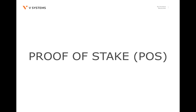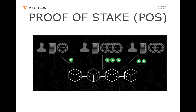Moving on to the next consensus algorithm: proof of stake. One of the main concerns of proof of work was that it wasted a large amount of computing power. While the protocol was very good at maintaining the system's security, every single node calculating some arbitrary hash function is a waste of resources. Peercoin was the first significant cryptocurrency that tried to solve this issue by adopting a different consensus algorithm, known as proof of stake.